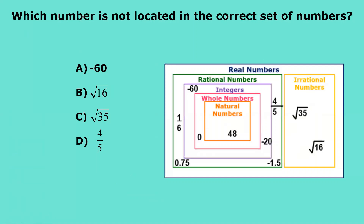Which number is not located in the correct set of numbers? Pause the video, answer the question, and come back to see if you are correct. Your answer is B. The reason why it's B is because even though it is expressed as a radical, if you find the square root of 16, it gives you 4, which makes it a natural number.